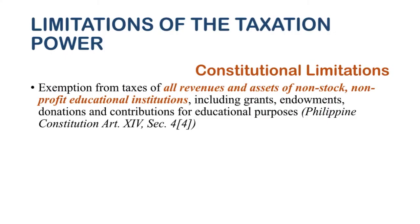Next is the exemption from taxes of all revenues and assets of a non-stock and non-profit educational institution, including grants, endowments, donations, and contributions for educational purposes. For example, Father Saturnino Urios University is a non-stock, non-profit educational institution. All its revenues arising from tuition and matriculation fees are exempt from tax, and all its assets — properties, buildings, buses — are also exempt, provided they are used for educational purposes.